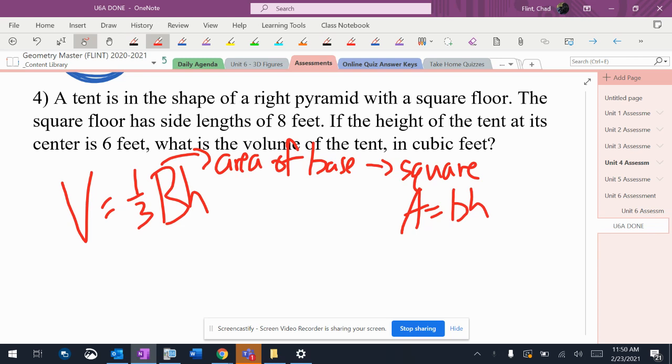Little b times h—that's the length of the base and the height of the square. It says the side length of the square is 8 feet. In a square, all the sides are the same, so this is going to be 8 times 8, which is 64. And remember, that is capital B.